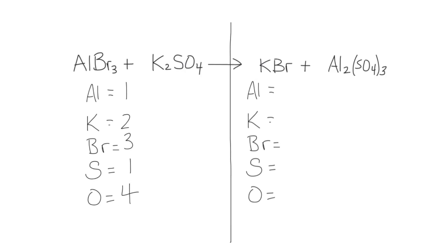On the right side we have two aluminums, one potassium, one bromine, and three sulfurs. The reason we have three sulfurs is because the sulfate ion SO₄ is inside parentheses multiplied by three, so everything inside is multiplied by three — giving us three sulfurs and twelve oxygens.